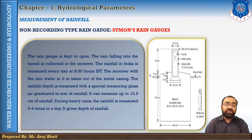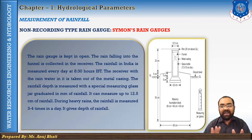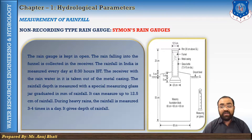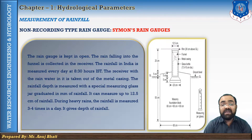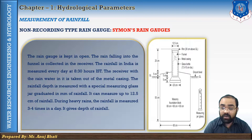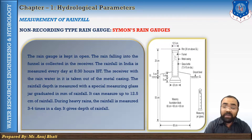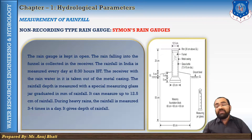In this rain gauge, the rain gauge is kept open in an open area. The rain falling into the funnel is collected in the receiver. In India, rainfall is generally measured every day at 8:30 hours Indian Standard Time. The receiver with the rainwater is taken out of the metal casing, and then the rainfall depth is measured with a special measuring glass. This can be measured up to 12.5 centimeters of rainfall only. During heavy rains, the rainfall is measured three to four times a day because of this 12.5 cm limitation.